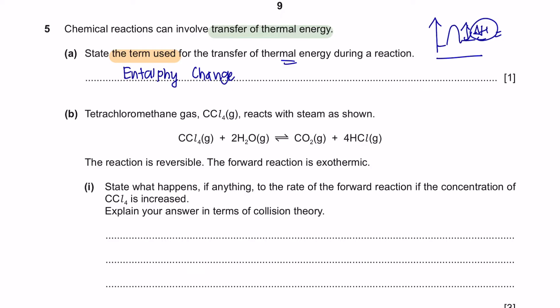Question B. Tetrachloromethane gas, CCl4, reacts with steam. The reaction is reversible. As you can see here, this is reversible. It says that the forward reaction is exothermic. Part 1: State what happens, if anything, to the rate of forward reaction if the concentration of CCl4 is increased. Then explain your answers in terms of collision theory.